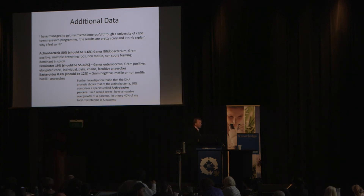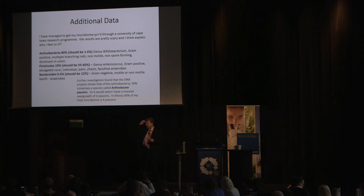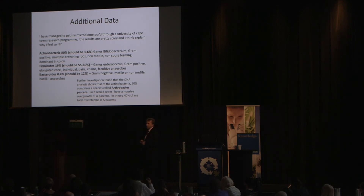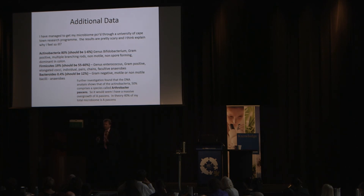We were having a conversation about what else we could do when the University of Cape Town began doing microbiome research and looking for volunteers. He phoned up and asked if they would do a PCR of his gut bacteria — a genetic analysis rather than a culture. He came back showing that his Actinobacteria composed 80% of his stool, whereas it should only be 1% to 6%. His Firmicutes were at 19%, should be 55% to 60%, and his Bacteroidetes were 0.4%, should be 12%. This is a dramatic shift in compositional diversity — dysbiosis of an exceptional quality.